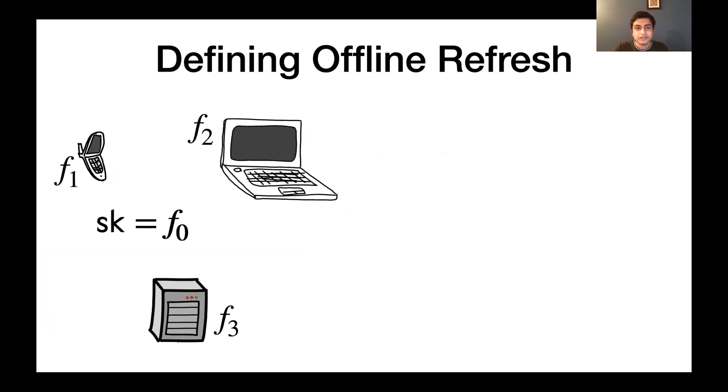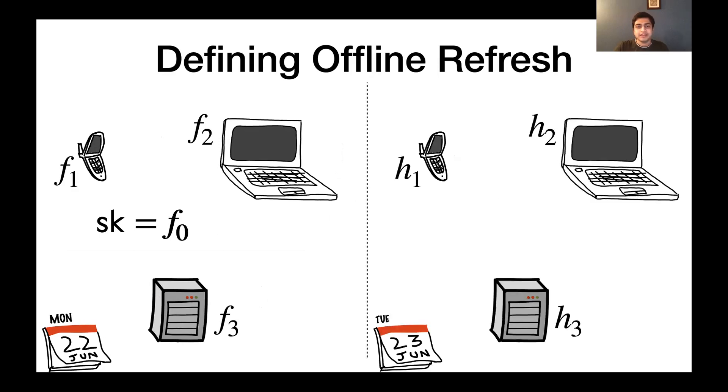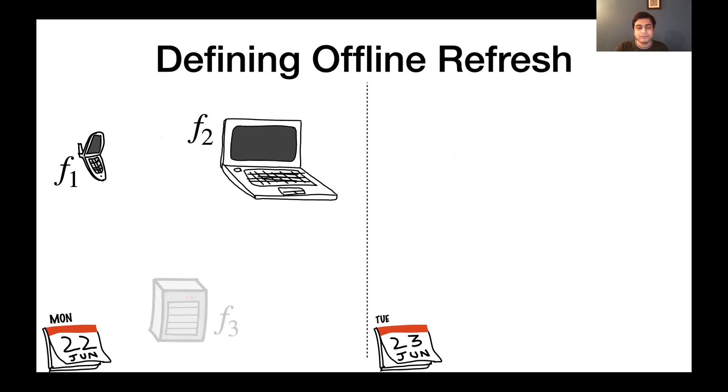So to see how this works in the context of proactivization, let's say on Monday, everyone has shares of polynomial f. We believe that on Tuesday, everyone has shares of a polynomial h, which is completely independent of f, with the one constraint that they both evaluate to the same value at 0, that is the secret. So offline refresh protocols should work as follows.